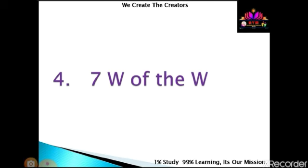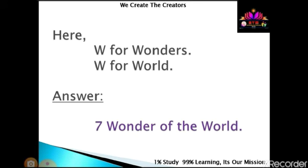7 W of the W. Here both Ws represent two words. Any guess? First W for wonders, second W for world. Answer: 7 wonders of the world.